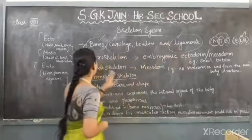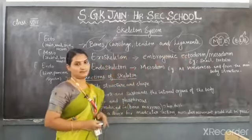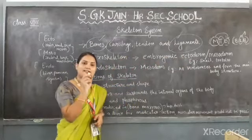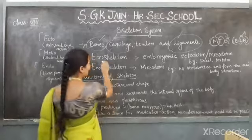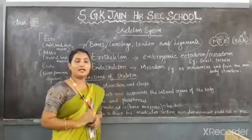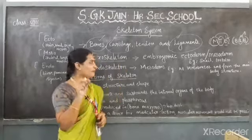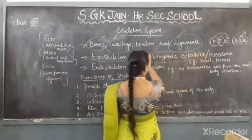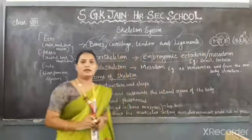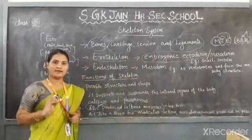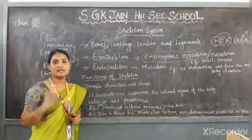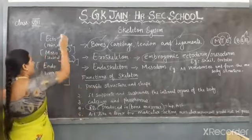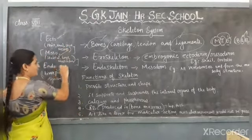Now, the exoskeletal system. Some organisms have an exoskeletal system. In this system, the bones originate from the embryonic ectoderm. All living organisms consist of three layers: ectoderm, mesoderm, and endoderm.